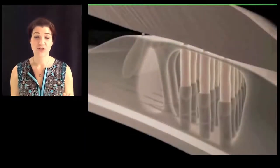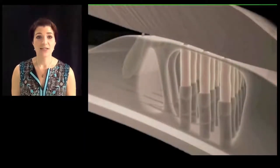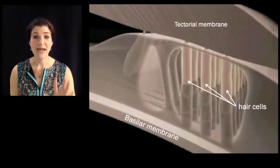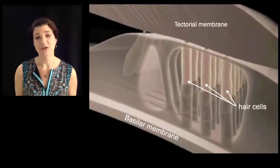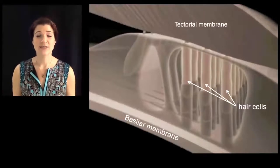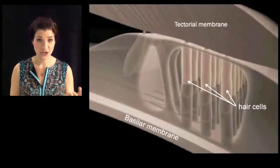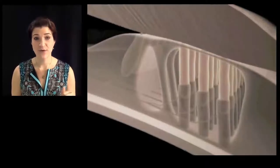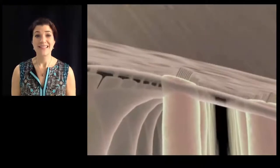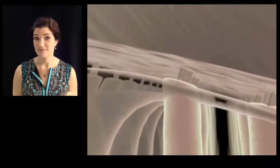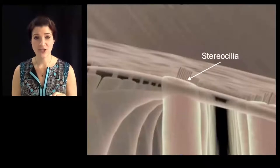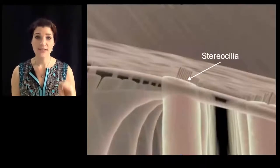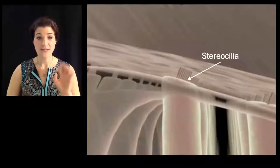This has big consequences for the structures inside the organ of Corti. Here's our basilar membrane at the bottom and the tectorial membrane at the top. The auditory hair cells are embedded in the basilar membrane — the feet of those hair cells are locked into it, which means that as the basilar membrane moves, the hair cells are lifted up along with it. As the basilar membrane moves, the stereocilia at the top of the hair cells are pressed up against the tectorial membrane.